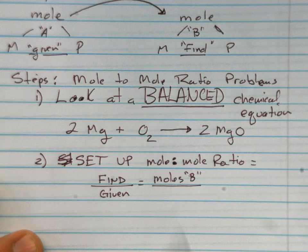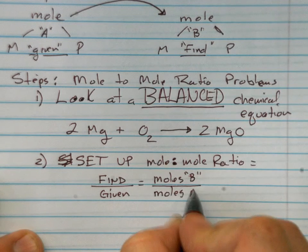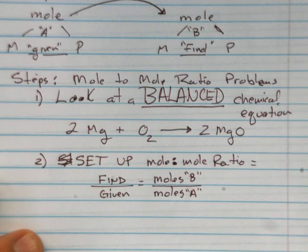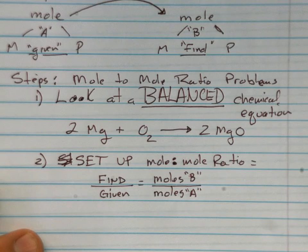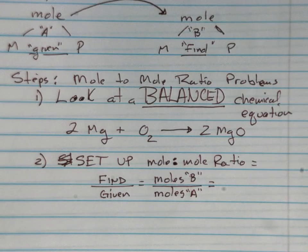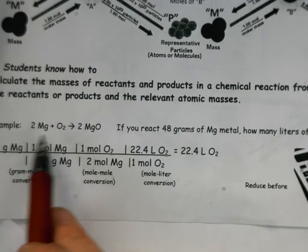This will equal moles of compound B from our diagram divided by the moles of the given. In this case, the given we'll say is always going to be part A on the triangle.